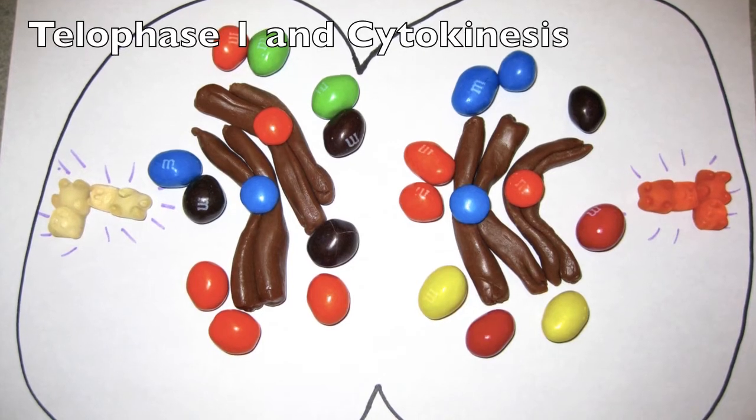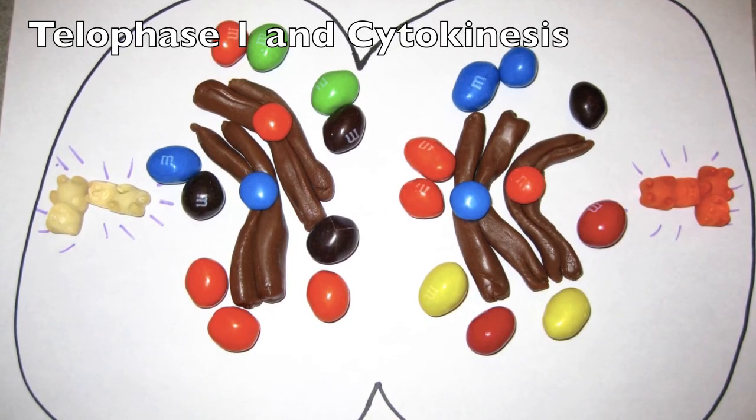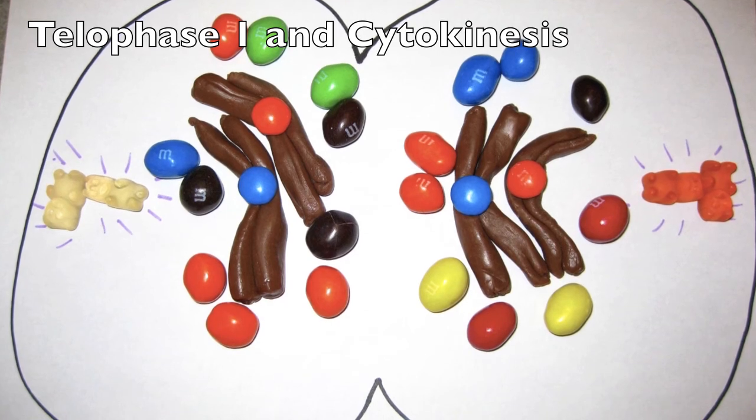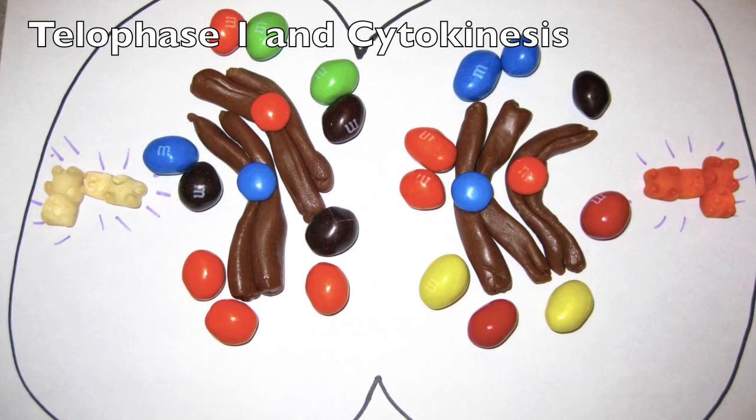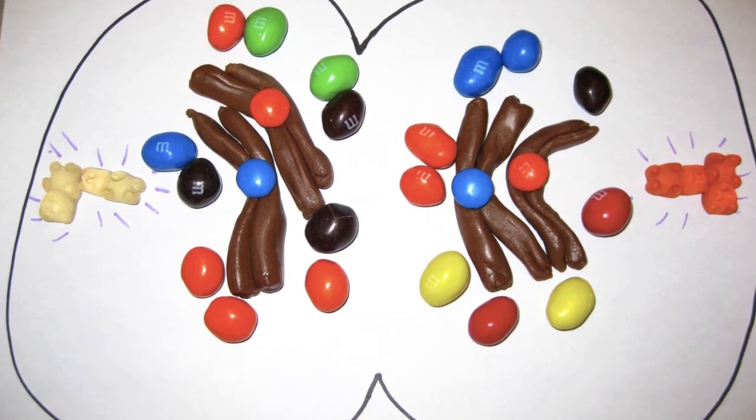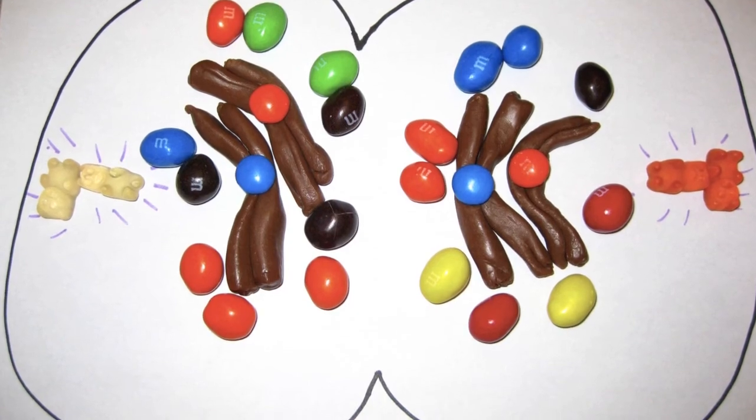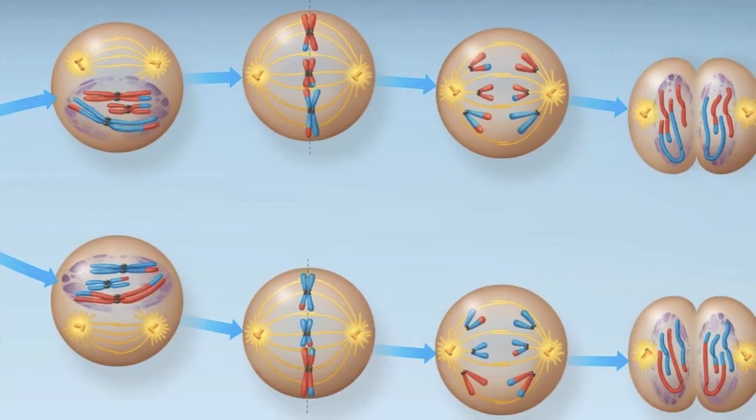In telophase I, each half of the cell has a complete haploid set of chromosomes, each consisting of two sister chromatids. Cytokinesis occurs in animal cells by the formation of a cleavage furrow. Meiosis I is now complete.